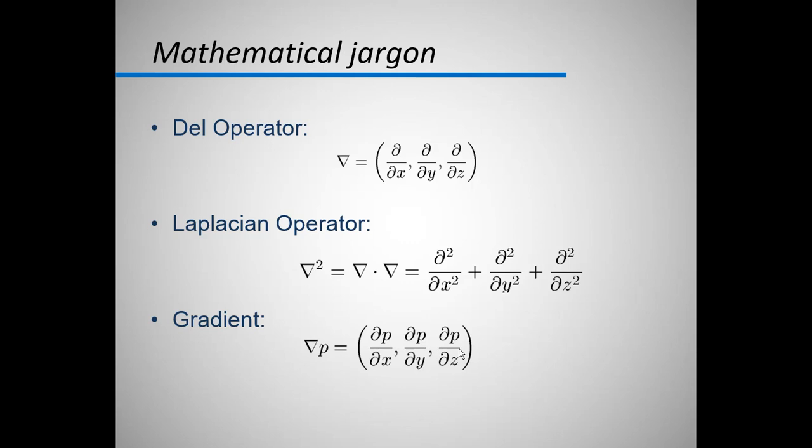So first of all is the del operator. Del operator basically represents the gradient of anything, so it is represented by ∂/∂x, ∂/∂y, ∂/∂z. And obviously in the numerator you can add u, v, w or T for temperature, etc. Then there is Laplacian operation which is the dot product of two del operators. It is expressed as ∂²/∂x² + ∂²/∂y² + ∂²/∂z² and obviously there would be some vector for representing the velocity.